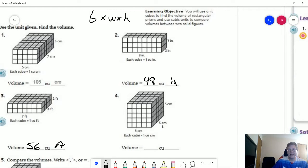For number four, we're doing 5 times 5, which is 25. 25 times 5 gives us 125, and we are working with cubic centimeters for that.